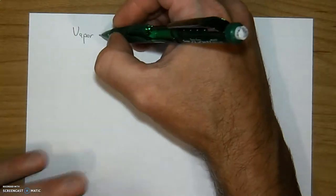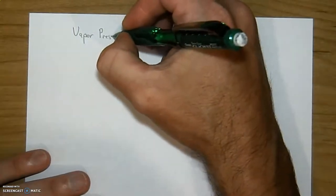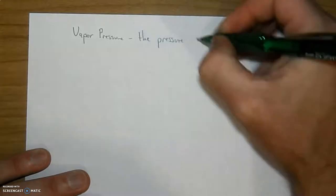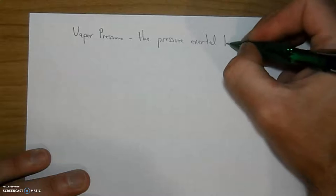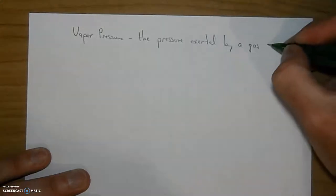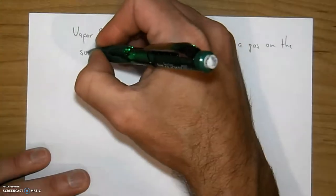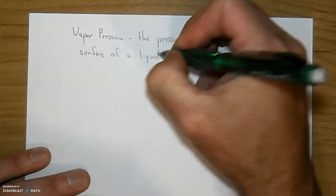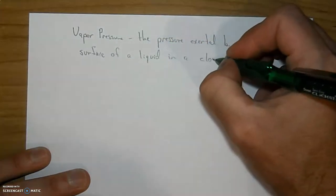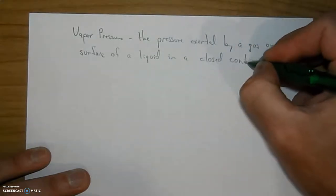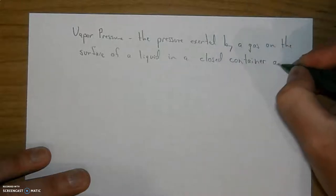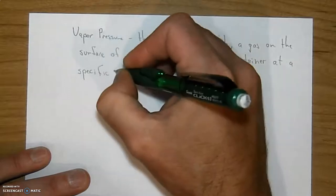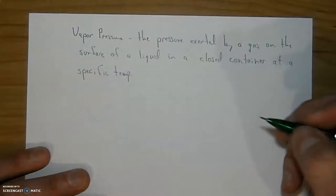The vapor pressure. That is the pressure exerted by a gas on the surface of a liquid in a closed container. Think like a two liter bottle. At a specific temp. And we'll talk more once I get some of this down.